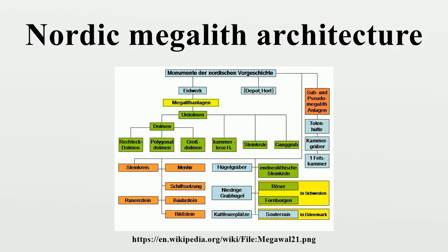In addition, there are polygonal dolmens and types that emerged later, for example the Gracchister and Rose. This nomenclature, which specifically derives from the German, is not used in Scandinavia where these sites are categorized by other, more general terms — as dolmens, passage graves and stone cysts.